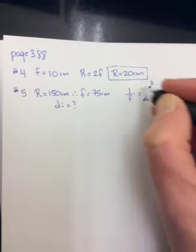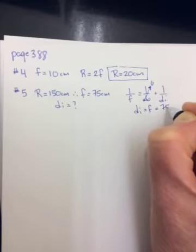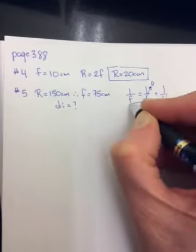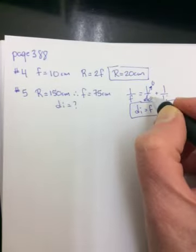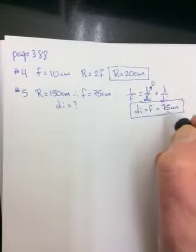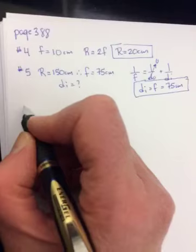The whole point being this is going to go to 0 when DO is really big. So what must DI be? Cross multiply. DI must be equal to F. It must be equal to 75 centimeters. So whenever it says a distant, like from a distant object, it means the 1 over DO is going to go to 0 and the image is going to be formed at the focal point at F.